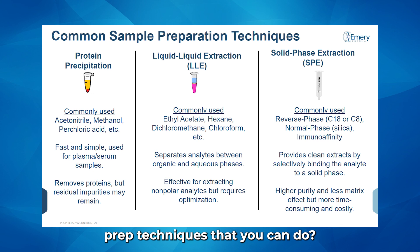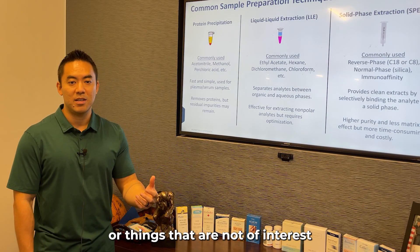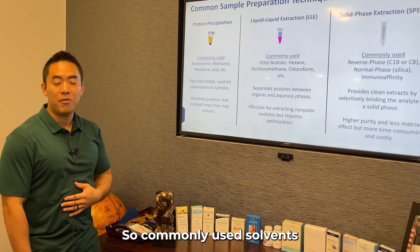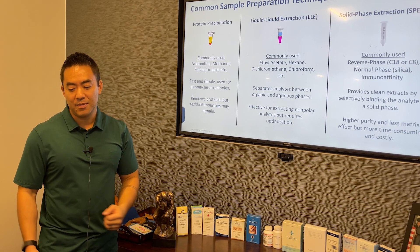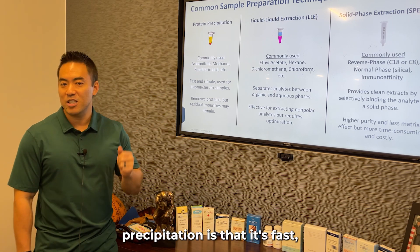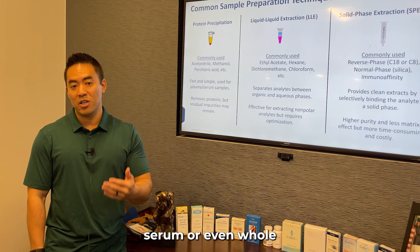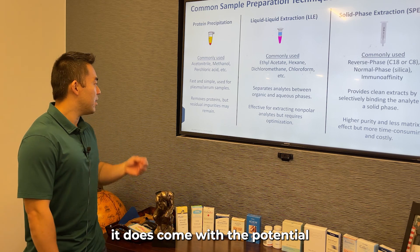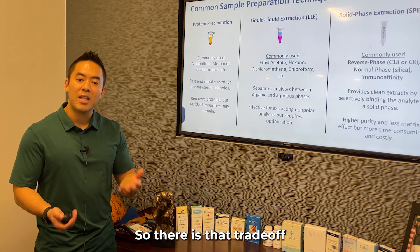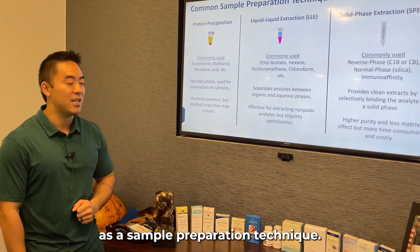So what are some common sample prep techniques? The first and most common is protein precipitation. What we're doing here is precipitating out all of the proteins or things that are not of interest as a way to clean up our sample. Commonly used solvents include acetonitrile, methanol, and perchloric acid. The major benefit is that it's fast, straightforward, and simple. This is the most commonly used preparation technique for plasma, serum, or even whole blood analysis. While it is successful at removing proteins, it does come with the potential that some residual impurities can remain — a trade-off to consider when developing your method.